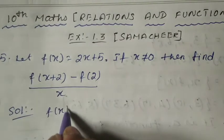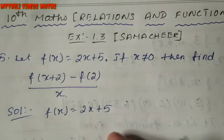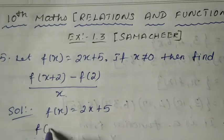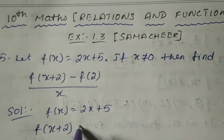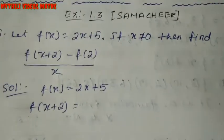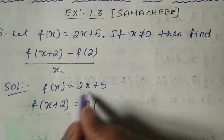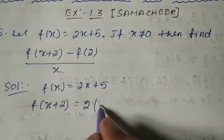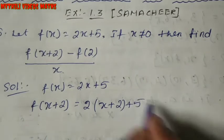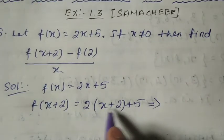The main function is f(x) = 2x + 5. To find f(x+2), instead of x we have to substitute x+2. So write it as 2 times (x+2) plus 5. When we expand the bracket, we multiply 2 inside, giving us 2x plus 2 times 2.